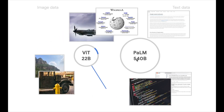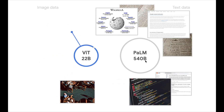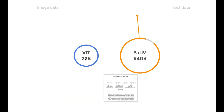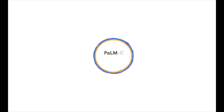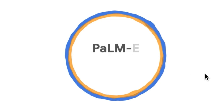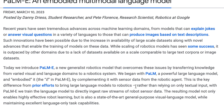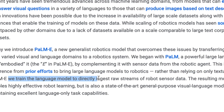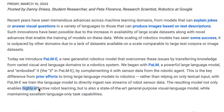PaLM-E is a fusion of PaLM, which is the language model with 540 billion parameters, and Visual Transformer with 22 billion parameters. They fuse them together to get the PaLM-E model. The E stands for embodied, and it totally has 562 billion parameters. The key difference from previous models is that rather than relying only on textual input, with PaLM-E we train the language model to directly ingest raw streams of robot sensor data, resulting in highly effective robot learning and a state-of-the-art general-purpose visual language model while maintaining excellent language-only task capabilities.